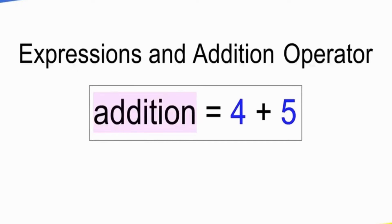Next, let's talk about math operators. What math operators do we need to use in Python? The first is the addition operator. The addition operator is just a simple plus. The entire number will add. The addition variable is stored. The addition operator is just two numbers.